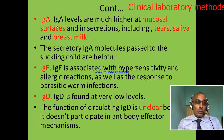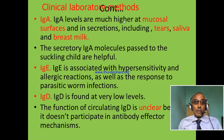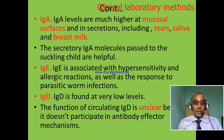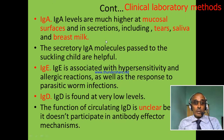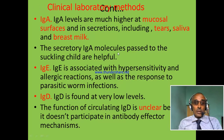The third immunoglobulin is immunoglobulin A. IgA levels are much higher at the mucosal surface and secretions like tears, saliva, and breast milk. A mother can transfer immunoglobulin A during breastfeeding to her child.